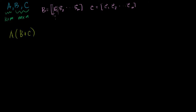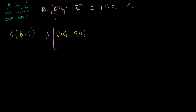These are column vectors, so they actually have some verticality to them. So what is A times B plus C? Let's figure out what B plus C is. When you add B plus C, the definition of matrix addition is you just add the corresponding columns, which essentially boils down to adding the corresponding entries. So the first column is B1 plus C1, the second column is B2 plus C2, all the way to the nth column, which is Bn plus Cn.